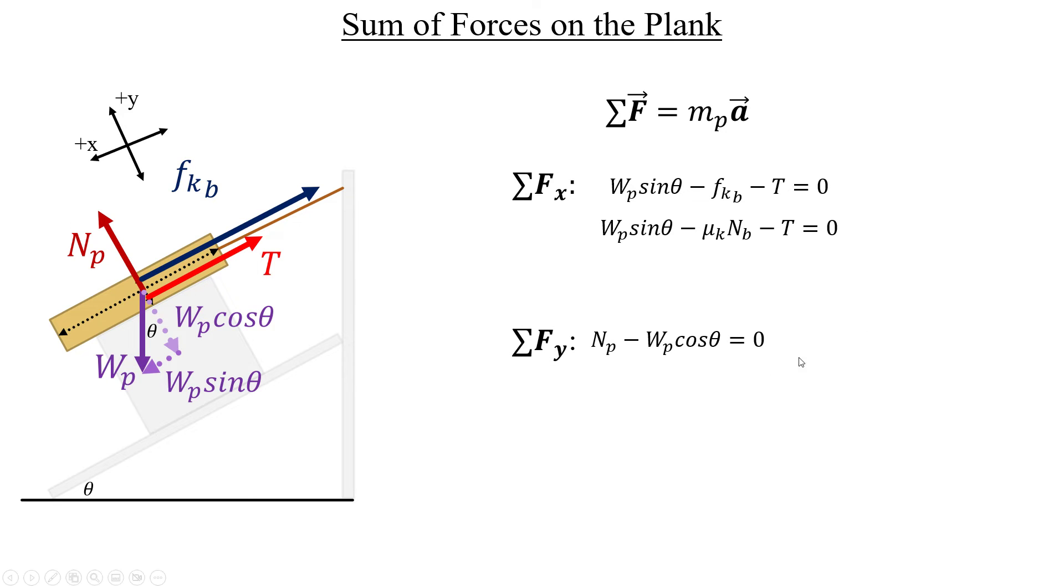When we switch to the other direction, here's what we have. The normal force from the plank points in the plus y direction and then, of course, this bad boy, the cosine piece of the plank's weight points in the negative y direction and equal to zero. So, this is cool. Here we get lucky. We get an exact representation of what that normal force is for the plank. So, now we have something useful. And I'm going to underline this one because we're going to bring all of those together.